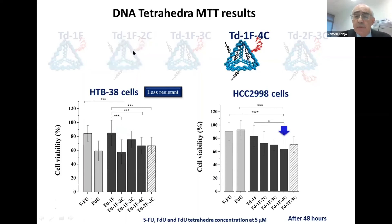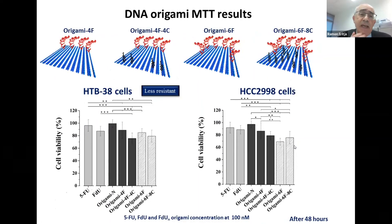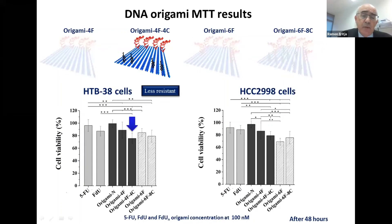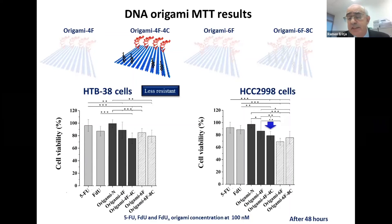In the more resistant cells, we saw some change, and it is the one with four cholesterols that is the most active. We also saw that adding more FDU does not improve the activity. In the case of the origami, we saw slightly less effect because we are working at a very small concentration — 10 nanomolar rather than 5 micromolar — and the best result is with four cholesterols and four oligomers carrying 40 FDU nucleotides. In the more resistant cells, the four-cholesterol, four-oligomer combination is still the best.